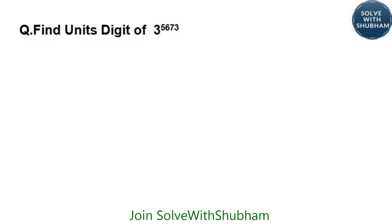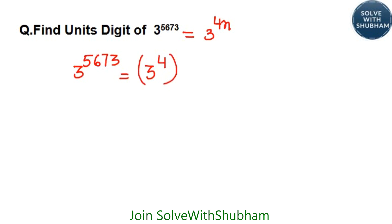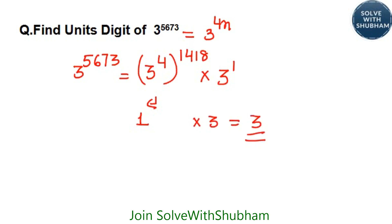Find the units digit of 3 to the power 5673. We will represent this number in terms of 3 to the power 4N, because the cyclicity of 3 is 4. Dividing 5673 by 4 gives 1418 remainder 1, so we write 3 to the power (4×1418) into 3 to the power 1. The first part ends with 1, and 3 to the power 1 ends with 3. So the answer is 3.